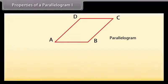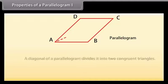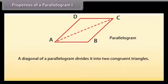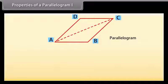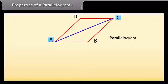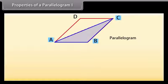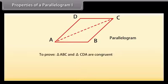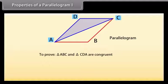Properties of a parallelogram 1: A diagonal of a parallelogram divides it into two congruent triangles. Let's prove this theorem. Let ABCD be a parallelogram and AC be a diagonal. We can see that diagonal AC divides parallelogram ABCD into two triangles: triangle ABC and triangle CDA.